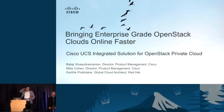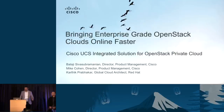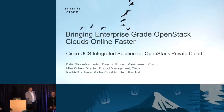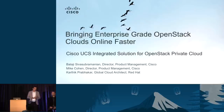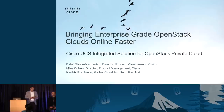Our presenters today are Balaji and Mike from Cisco, and Karthik from Red Hat. Balaji manages the UCS-based open source solutions — OpenStack is one of the things he actively works on with partners like Red Hat. Karthik is a key contributor from the Red Hat side in their joint solution, and Mike is the Director of Product Management for Cisco ACI solutions.